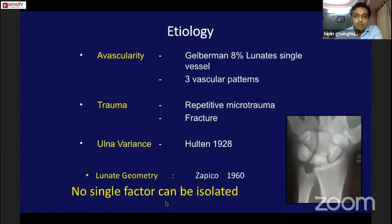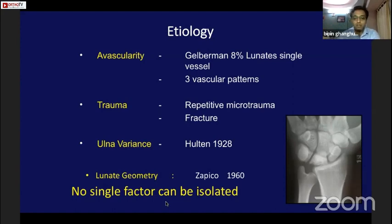There are different etiological factors of Kienböck's disease, including avascularity as described by Gelberman, repetitive microtrauma, ulnar variance as described by Hulten, and lunate geometry described by Zapico. However, we should remember that there is not a single factor which can be isolated in the case of this disease.